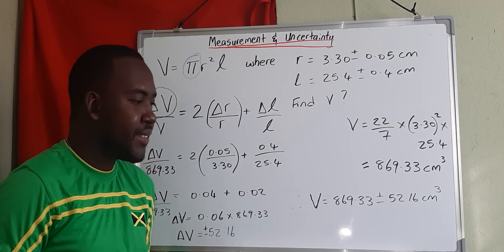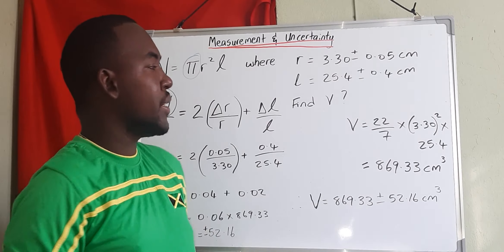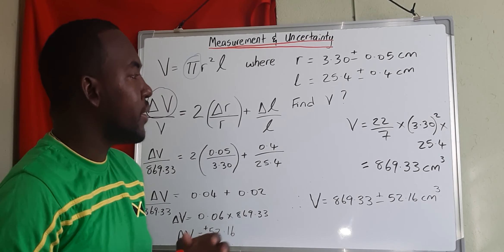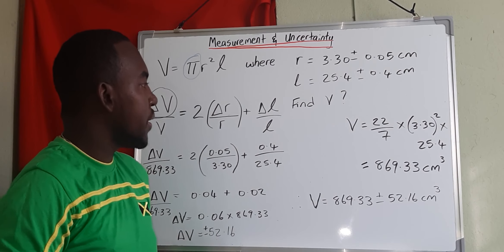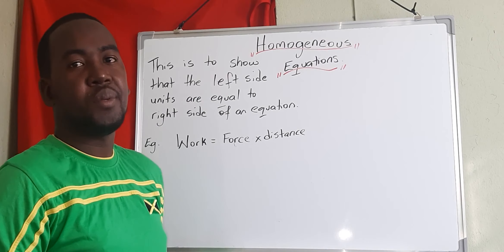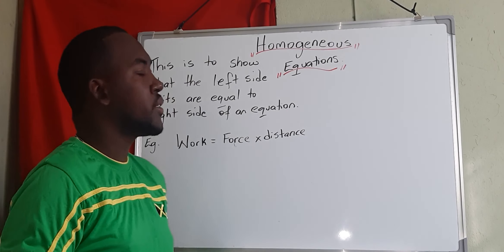So uncertainty, combining uncertainty is the same step for any given equation and values that you have received. The second part of this lesson will be homogeneous equations.